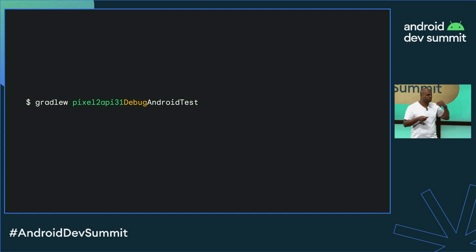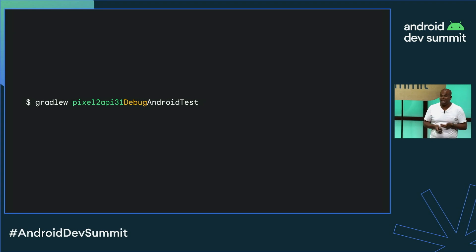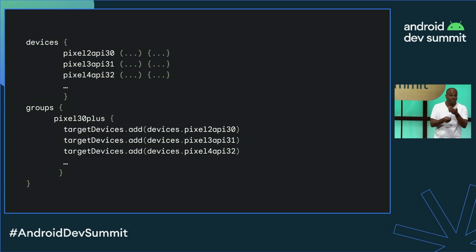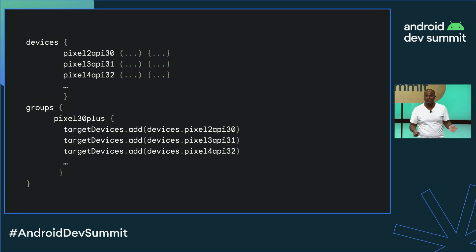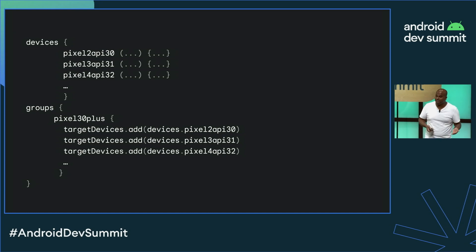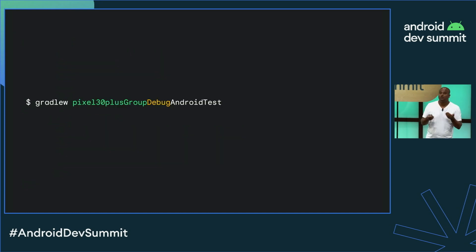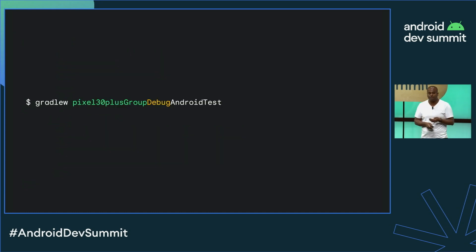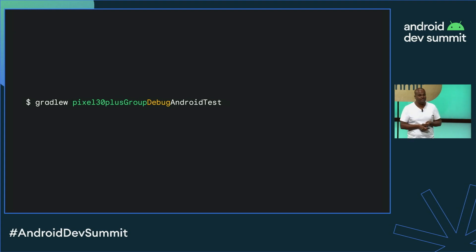But we want to run the tests on more than one device, and you can do that. You can define multiple devices and add them to a device group. And then just as easily, run your Android test task against that group, and Gradle Managed Devices runs your tests across those devices in parallel.